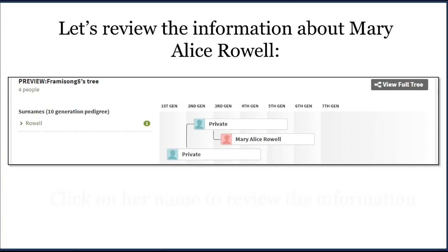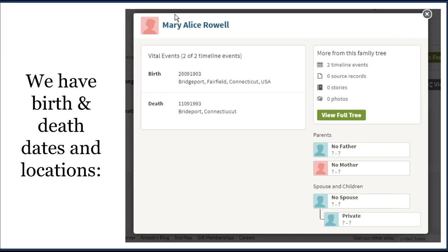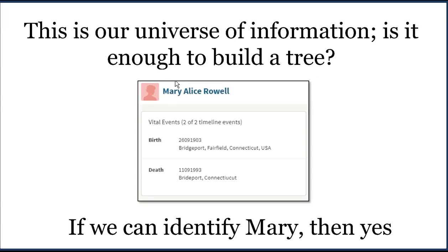We're going to click on Mary Alice Rowell to review the information associated with her. We see birth and death dates — she was born September 26, 1923, in Bridgeport, Connecticut, and is reported to have died September 11, 1993, also in Bridgeport. This is pretty good information about Mary Alice Rowell. As long as we can identify Mary, we should be able to build a relatively complete tree for this genetic match that may lead us to clues about how we're connected.